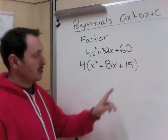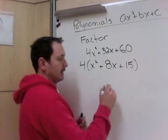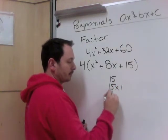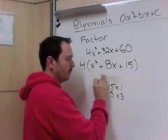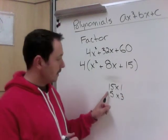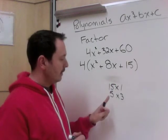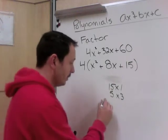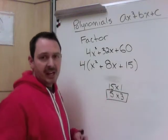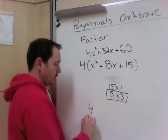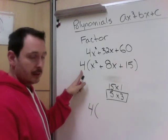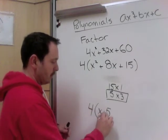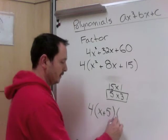So, what two numbers multiply to 15 and add to 8? Well, 15 is 15 times 1 and 5 times 3. When we add these, 15 plus 1 would be 16. 5 plus 3 is 8. So, I'm going to use 5 and 3. And using the shortcut method I just showed, don't forget the 4 out front, but now in our brackets, x plus 5, x plus 3.